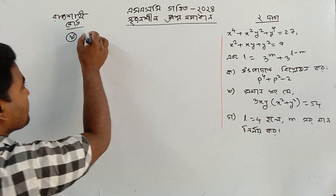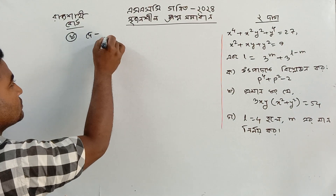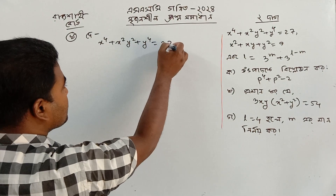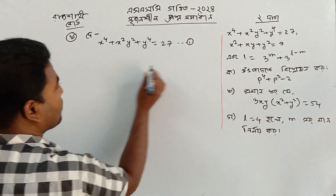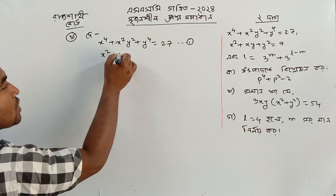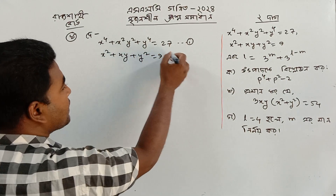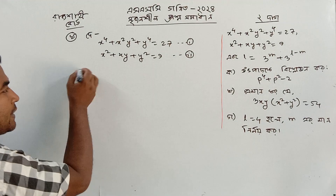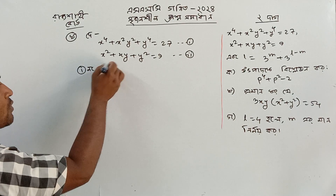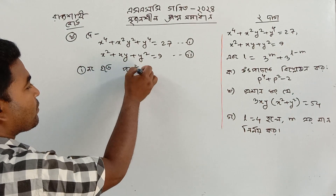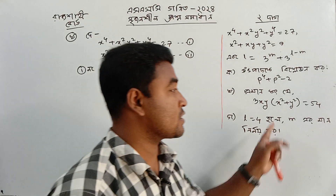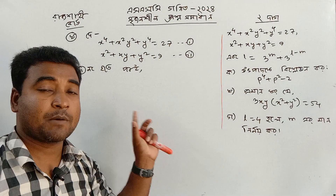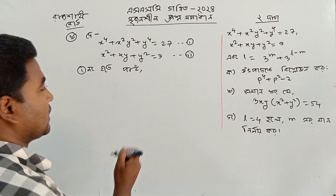This gives us x² plus y⁴ plus y² equal to 27, and x² plus xy plus y² equal to 9. So we can get 2 numbers. If we have the number of pi, we can work with x². First, we can do x² plus y².